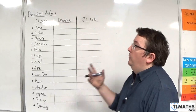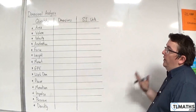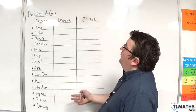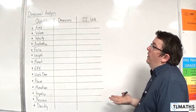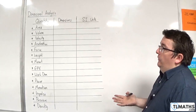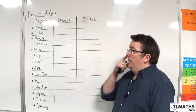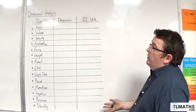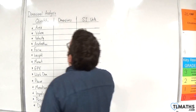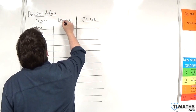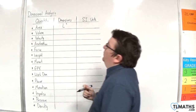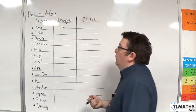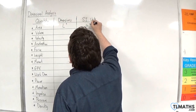We need to be able to work out the dimensions of each of these quantities, and also know their SI units. First of all, area. The dimensions would be L squared — L times L, length times length. And SI units would be in metres squared.